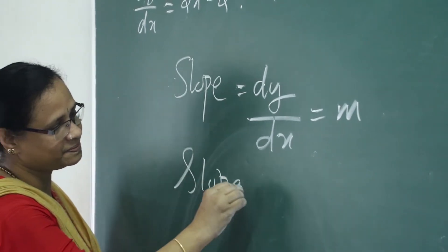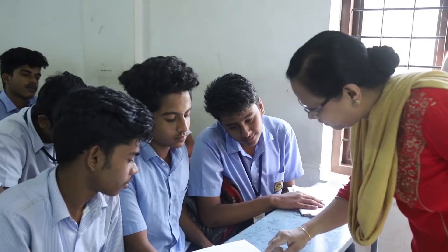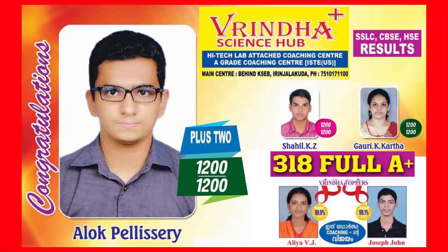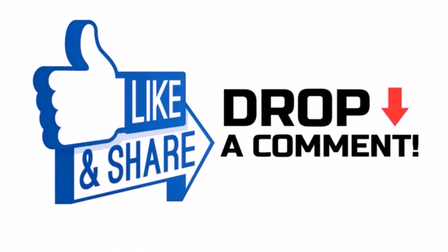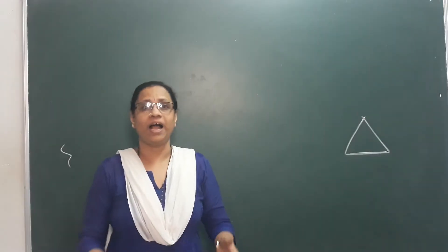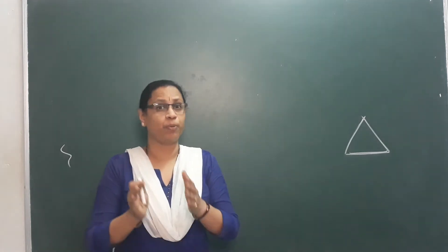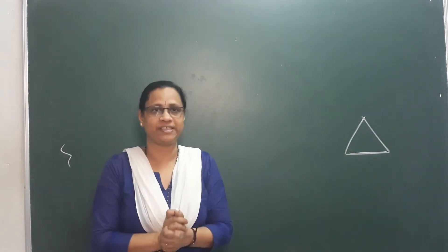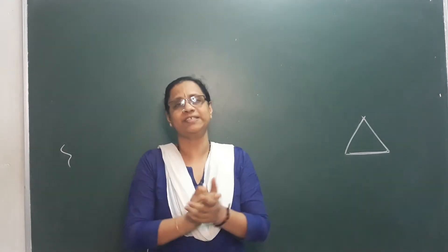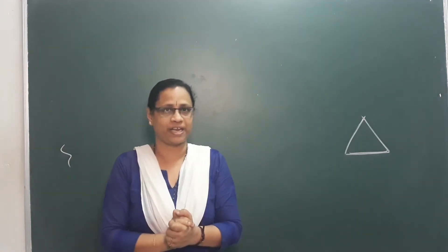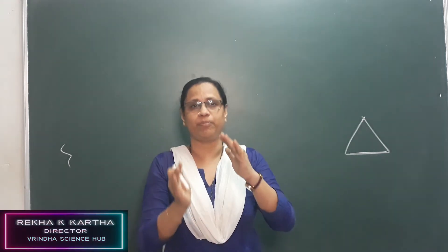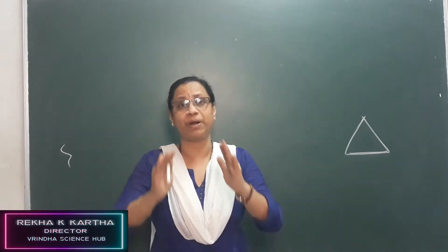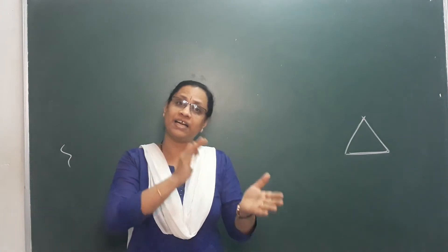Mathematics is an easy subject. Hi students! What is the chapter called Polygons? The shape of polygons — the simplest is called a Triangle.